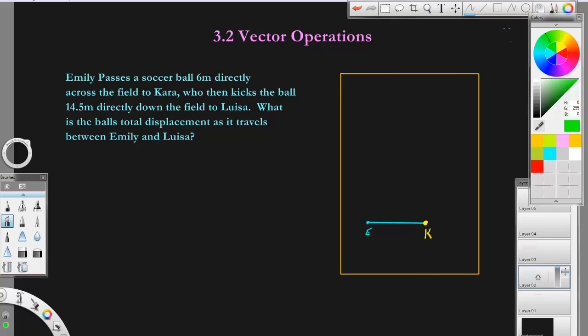And then she kicks the ball downfield to Louisa. And when you draw this, I mean this isn't really drawn in perspective to the field but it isn't too bad as far as perspective to the people on the field. So this will be Louisa, L.